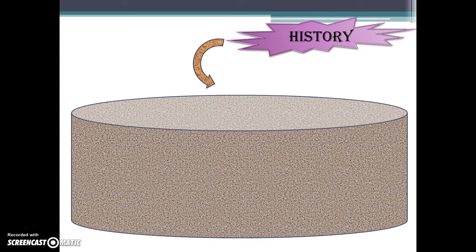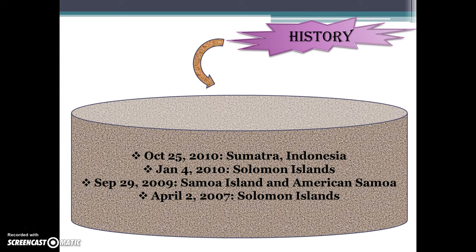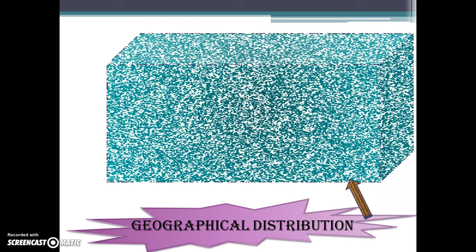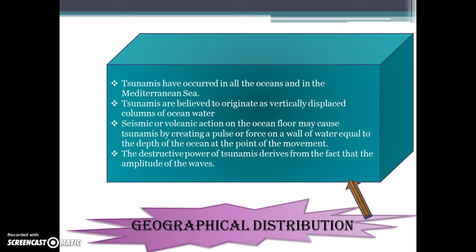History. The history of Sumatra, Solomon Islands, American Samoa, and the Indian Ocean are all witnesses to world-historical tsunamis. The first waves were triggered by two powerful earthquakes measuring 6.5 and 7.2 on the Richter scale. A major series of aftershocks altogether triggered events that left about 1,000 people homeless. The original tsunami, created by a magnitude 8.0 earthquake, caused the deaths of 50 to hundreds of people. Geographically, tsunamis have occurred in all oceans and in the Mediterranean Sea, believed to originate as vertical displacements of columns of ocean water.